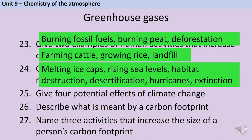As climate change occurs, we're going to see melting ice caps because of the raised temperatures, rising sea levels because all of that melted ice has to go somewhere, habitat destruction, desertification where new deserts form, and also hurricanes and extinction of certain species.